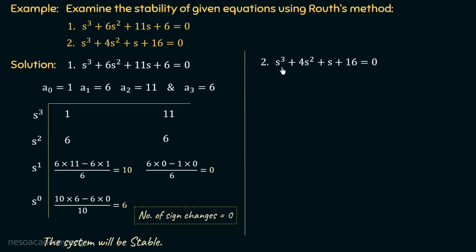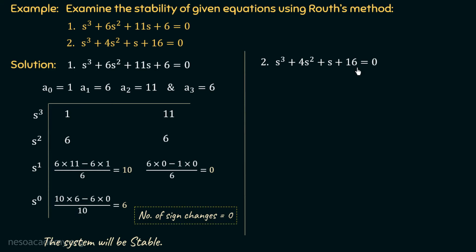The second example has characteristic equation s³ + 4s² + s + 16 = 0. This equation also satisfies both necessary conditions of stability — all coefficients are positive and all powers of s are present — so it is a Hurwitz polynomial. The coefficients are: a₀=1, a₁=4, a₂=1, a₃=16.